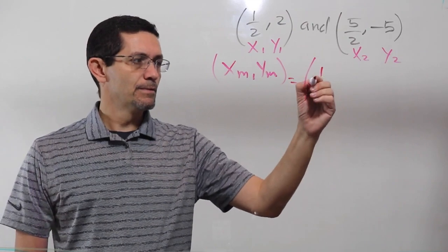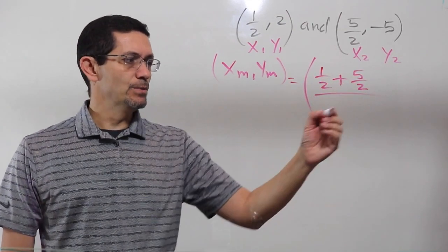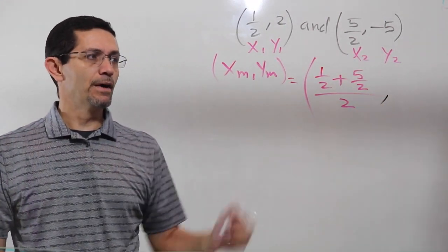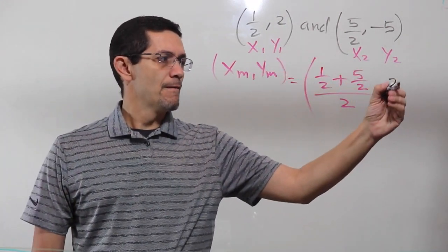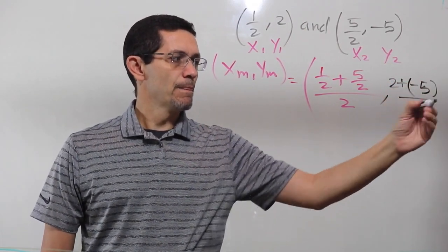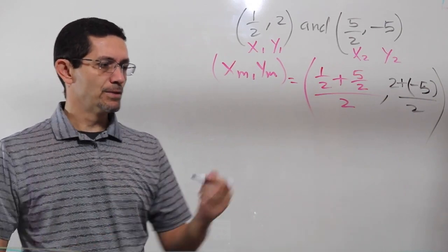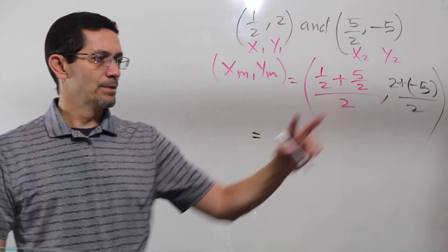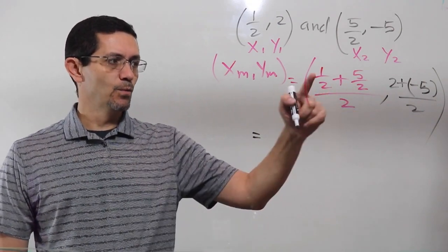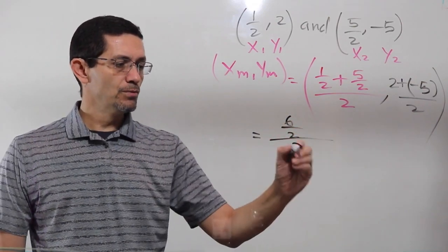So X1 plus X2 divided by 2. And that's about the values of X. And we do the same thing for Y. 2 plus negative 5 divided by 2. And from there, we've got to solve. Now, remember, I'm formatting fractions, and they have the same denominator. I just add the top.